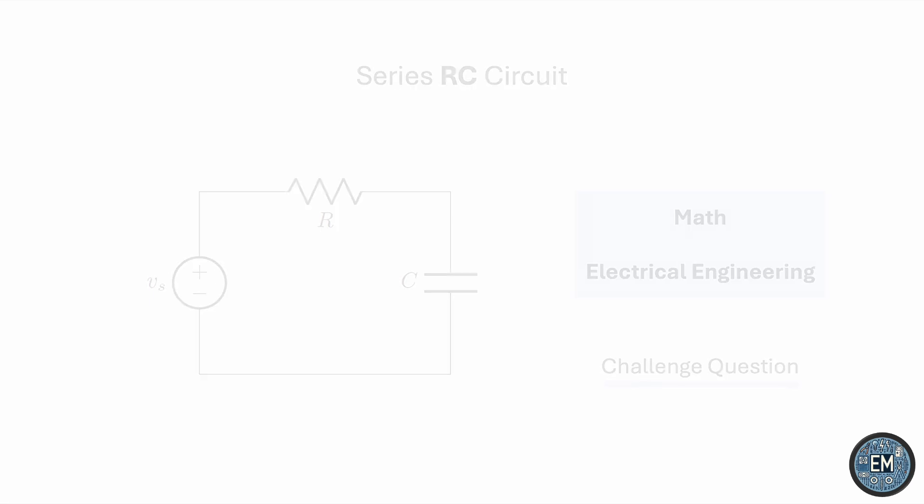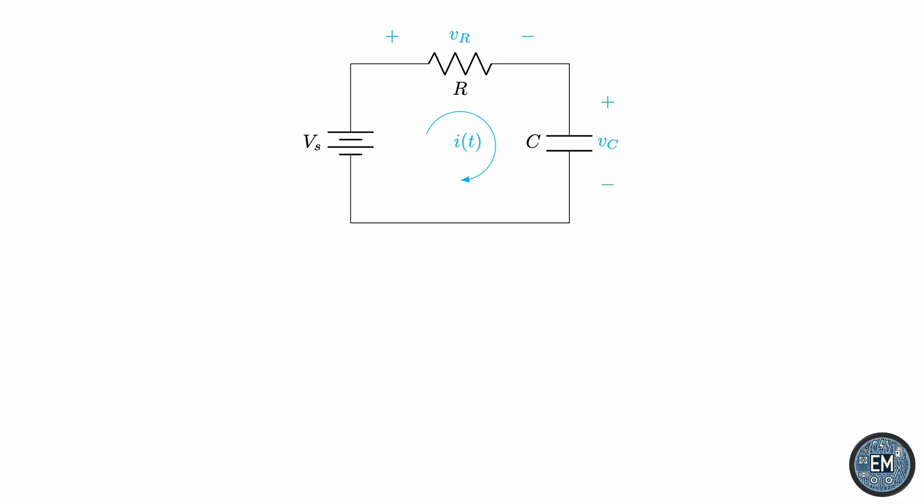Let's start with some labeling. Say we have a DC voltage source VS feeding a series combination of a resistor R and a capacitor C. The voltage drop across the resistor is VR and the voltage across the capacitor is VC. The current traversing the circuit is I(t). We know that VS will be equal to the sum of the two voltages.